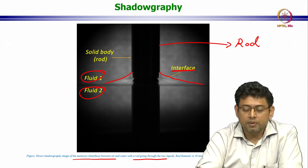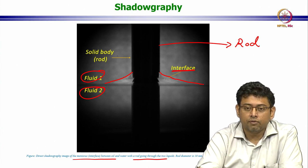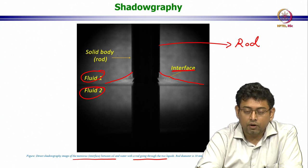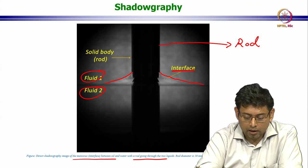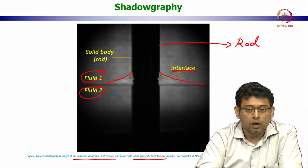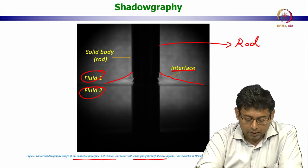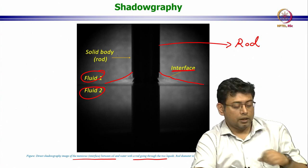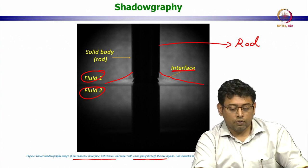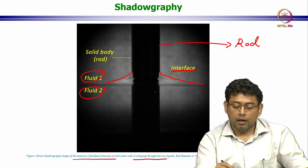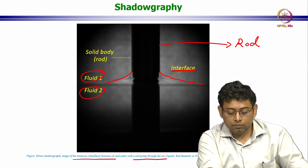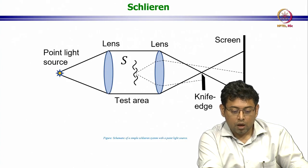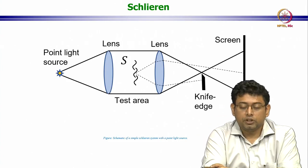The only problem is this data cannot always be used for quantitative evaluation, because in the shadowgraphy, the relationship between the image and the object is not always one-to-one and not always easily quantifiable. The image is not always a conjugate of the object, and hence these are not often used for highly quantitative visualizations. The one that is most popular is called Schlieren.